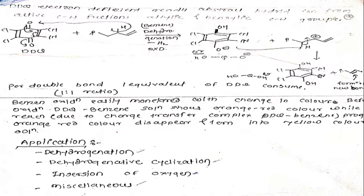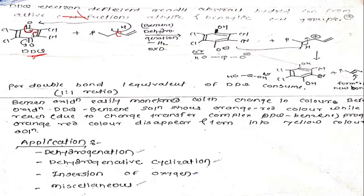Now let us learn the mechanism of DDQ — what is the function of DDQ? DDQ is an electron-deficient compound which abstracts hydrogen. It can abstract the hydrogen of a CH of an allylic compound or a benzylic compound. DDQ abstracts the lone pair and the proton. When it abstracts the proton, this bond shifts, and this bond shifts, and the oxygen accepts the electron and becomes negatively charged.